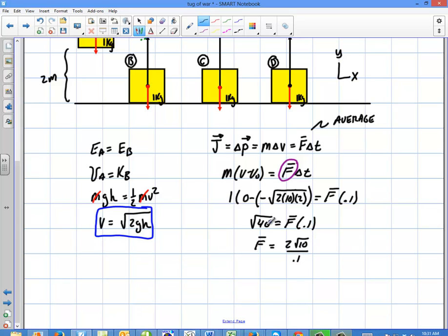Because that's 4 times 10, right? And then the 4 comes out as a 2. And then that's just going to equal 20 root 10 newtons up, because that's a positive, I got a positive answer for that.